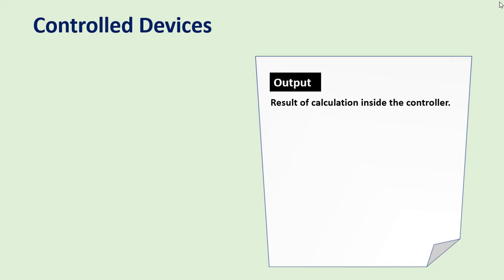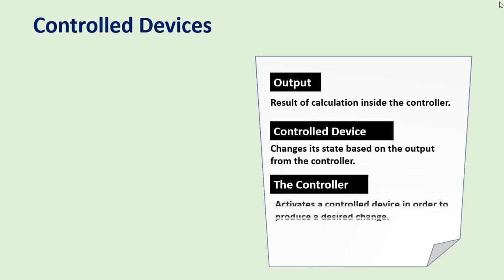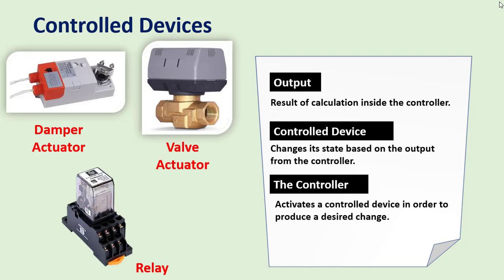An output is a result of calculations inside the controller. A controlled device changes its state based on the output from the controller. The controller activates a control device in order to produce a desired change. Examples of control devices can be a damper actuator, valve actuator, relay, or a contactor.